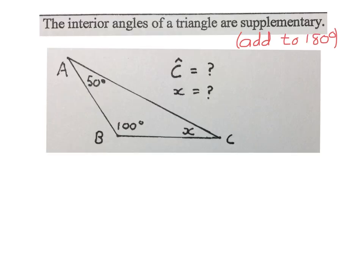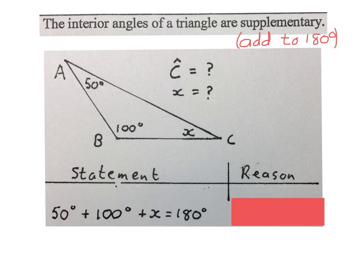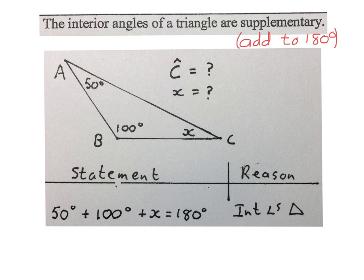The first question looks like this. They give us triangle ABC and tell us that angle A is 50 degrees, angle B is 100 degrees, and angle C is X. They can ask us to find the size of angle C, or find the value of X. When answering geometry questions, you have to write a statement and a reason. In this case we write: 50 degrees plus 100 degrees plus X equals 180 degrees. The reason is: interior angles of a triangle.